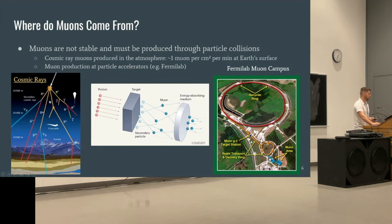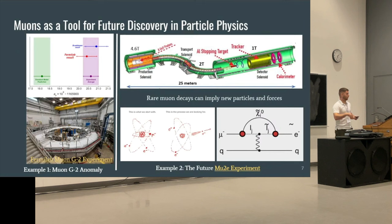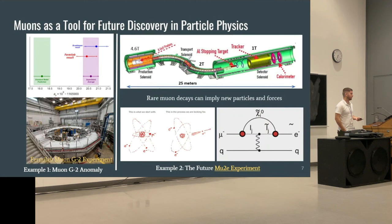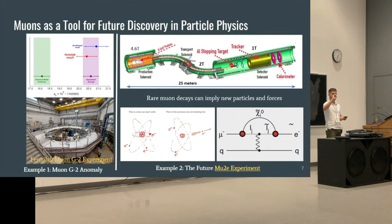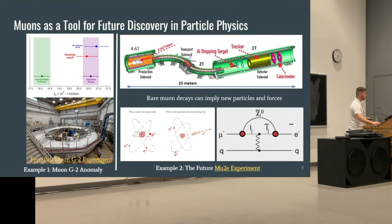As an example, Fermilab's muon campus produces muons and sends them to different experiments for fundamental physics study. Muons are also used as a tool for discovery themselves. The famous Fermilab Muon g-minus-2 experiment measures the intrinsic wobble of a muon. You can also calculate this wobble theoretically, and it turns out there's a pretty strong disagreement between experiment and theory at the four-sigma level, implying extra particles and forces beyond the standard model.